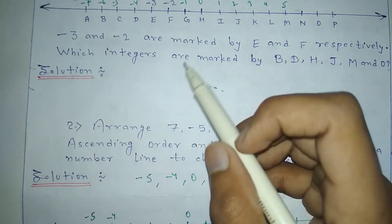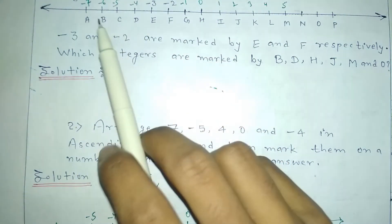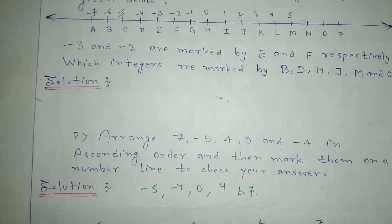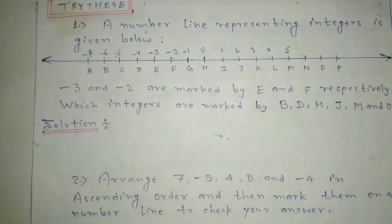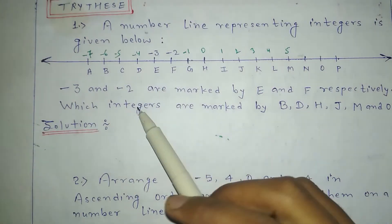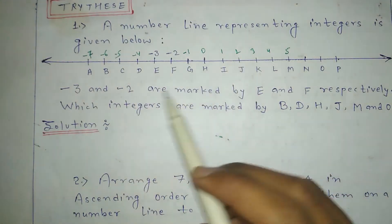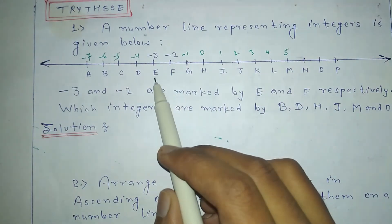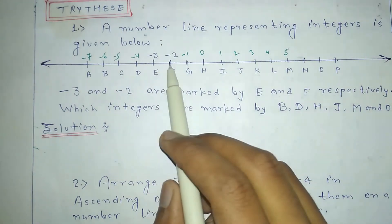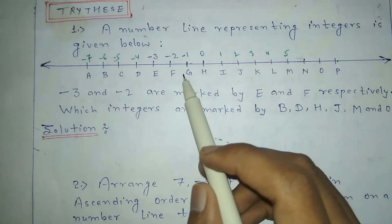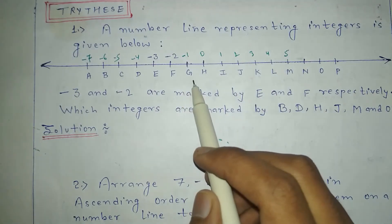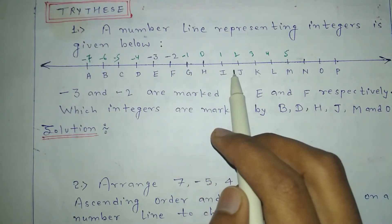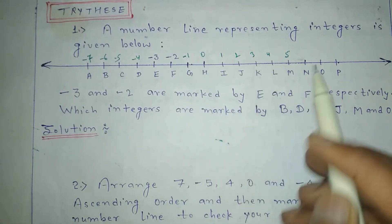Now let's try some questions to better understand integers. The first question: a number line representing integers is given, with points labeled A, B, C, D through O, P. We are already given that E = -3 and F = -2. So continuing from there: G = -1, H = 0, I = 1, J = 2, K = 3, L = 4, M = 5, and it goes on infinitely.